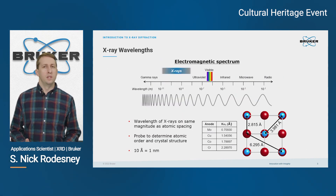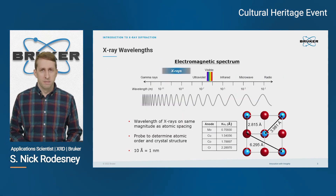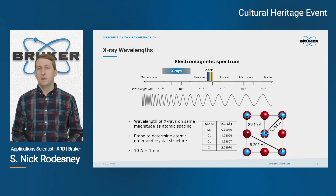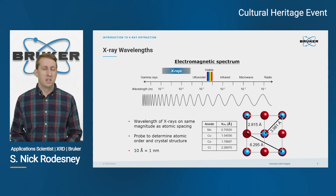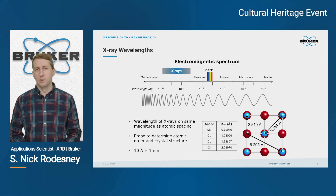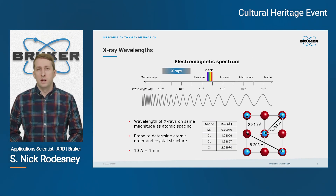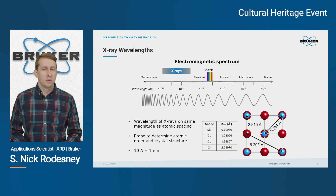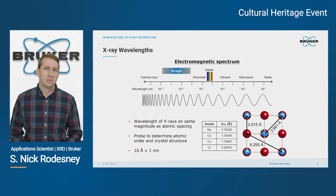So why do we use x-rays for XRD? It's because the wavelength of x-rays is on the same order of magnitude as the spacing between atoms in a crystal structure. Common wavelengths for XRD might range anywhere from 0.7 angstroms up to about 2.3 angstroms.